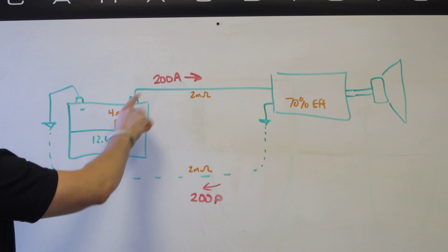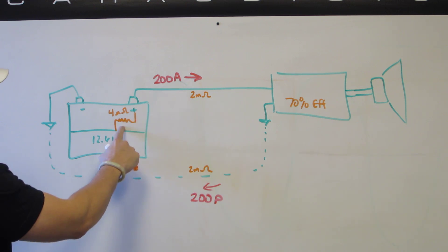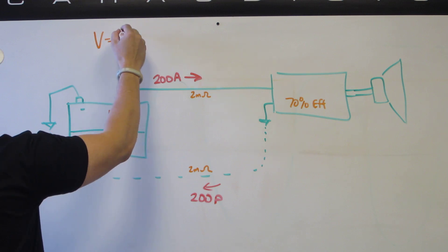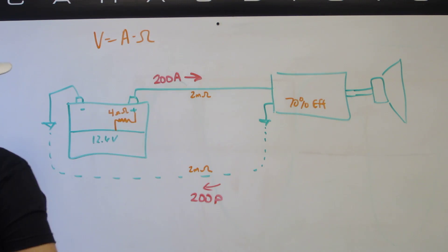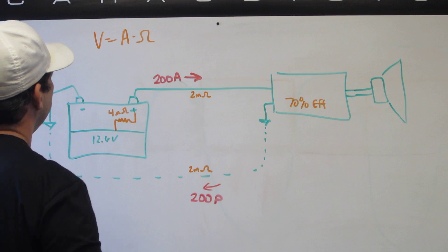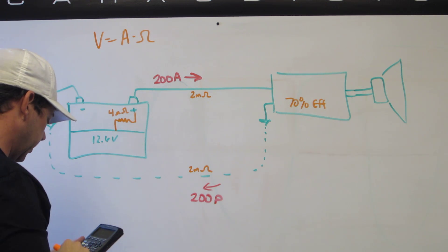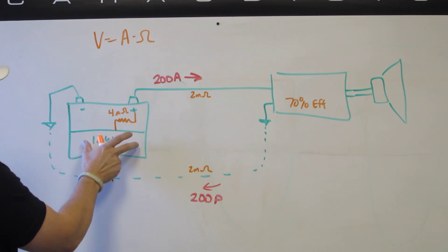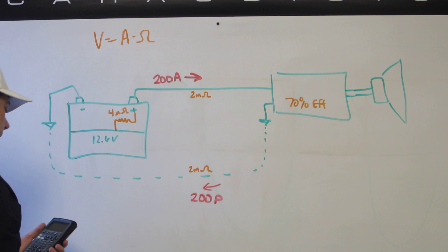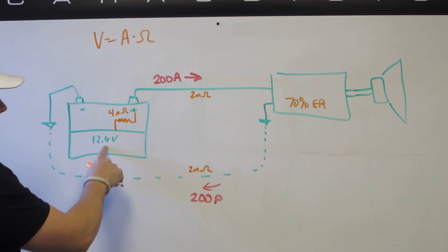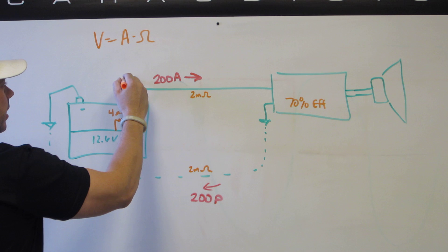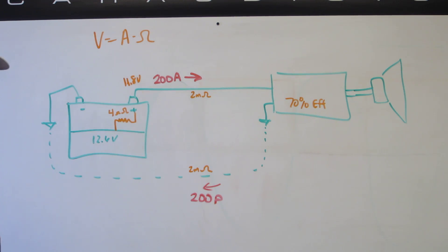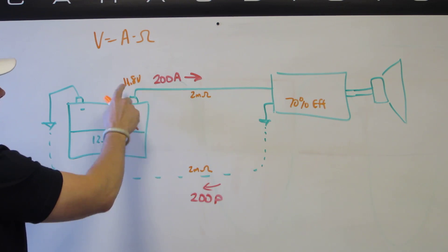If we have 200 amps coming out of the battery, that current goes across the internal resistance. Volts equals amps times ohms: 200 amps times 4 milliohms equals 0.8 volts. So from inside the battery to the terminal we lose 0.8 volts. The battery is 12.6V, so at the terminals we have 11.8 volts. If you put your meter on the terminals during this condition, you'd read 11.8 volts.